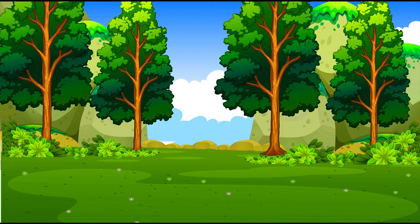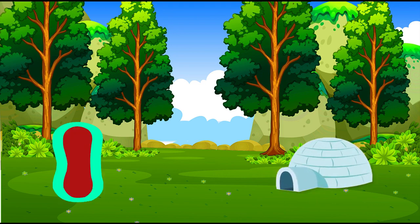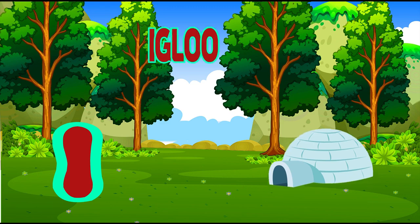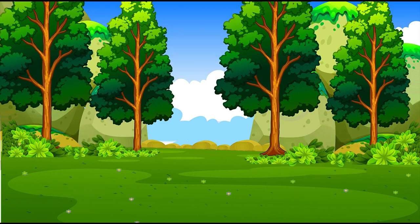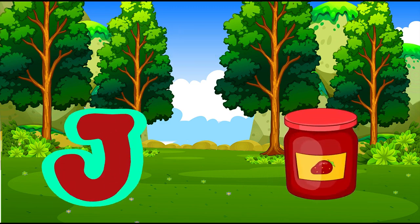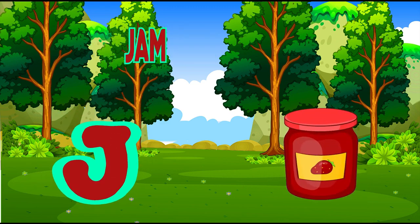I is for igloo, i-i-igloo. J is for jump, j-j-jump.